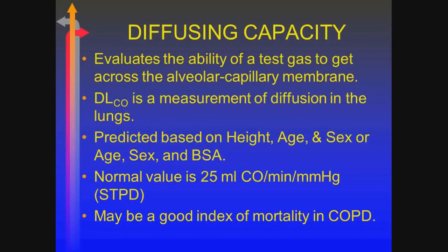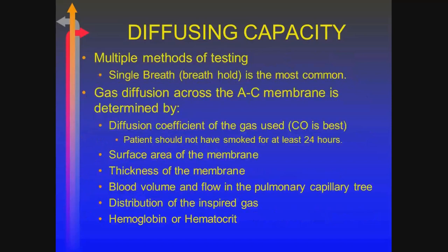Diffusing capacity — normal is 25, but there are actually predicted values based upon age, height, and gender. As diffusing capacity becomes more impaired, mortality increases. It's measured by having a patient breathe in a small amount of carbon monoxide and perform a breath hold. Carbon monoxide is very diffusible across the alveolar capillary membrane under normal conditions. Fick's Law tells us that as the alveolar capillary membrane thickens, diffusion falls. Also, as lung volume decreases, diffusing capacity decreases.